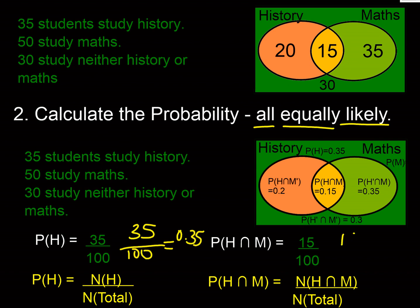The probability of doing history and maths: we've worked out there's 15 students doing history and maths out of 100, so the probability is 0.15. In principle we've worked out a probability theory: if they're all equally likely, the probability of doing history is the number of students doing history divided by the total number of students.